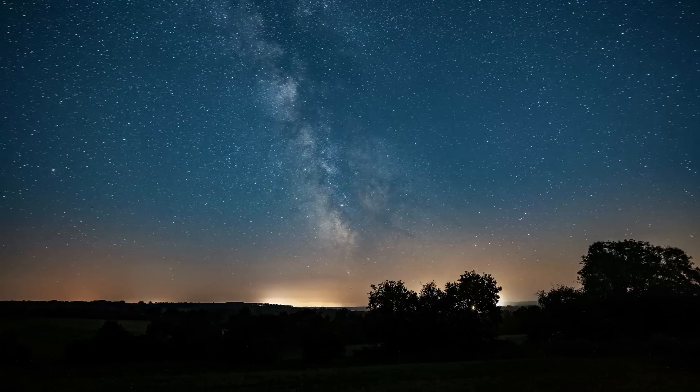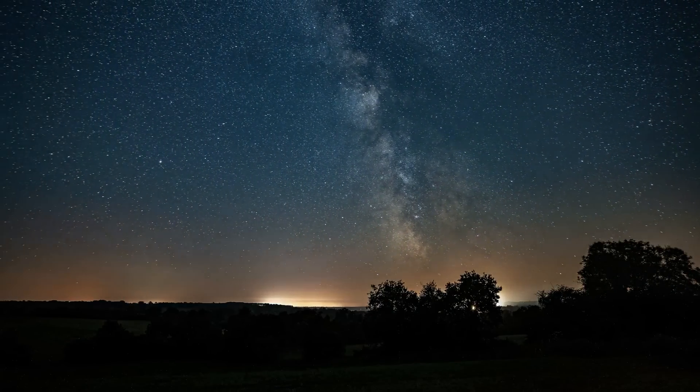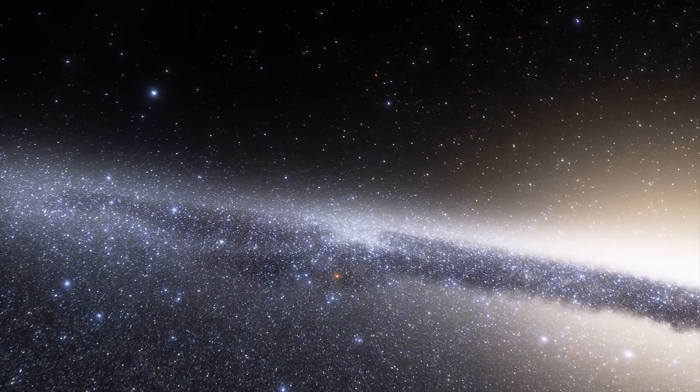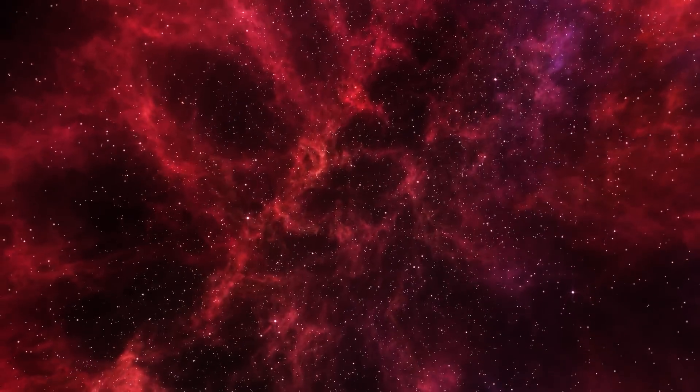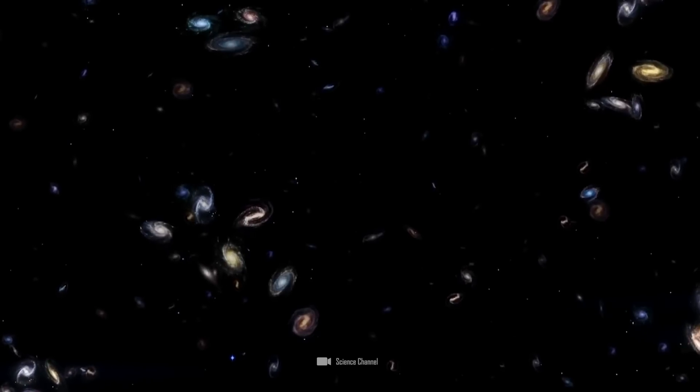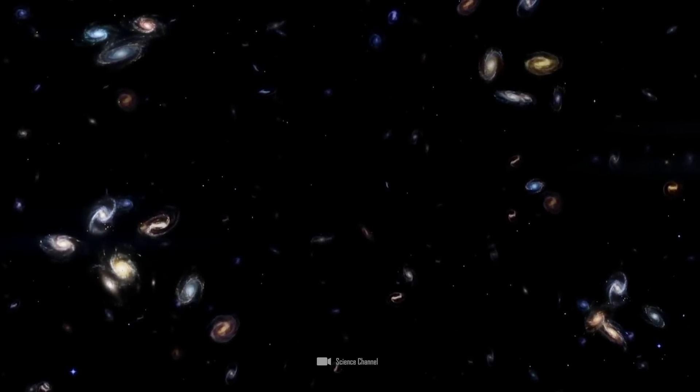The fact that we got into the grip of an external structure at all became known only around the year 1990. At that time, the researchers registered some anomalies in the Hubble flow, which means that the galaxy clusters in the corresponding region move away from each other more slowly than it should be the case with a uniform expansion of the cosmos.